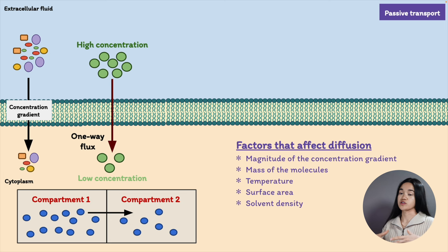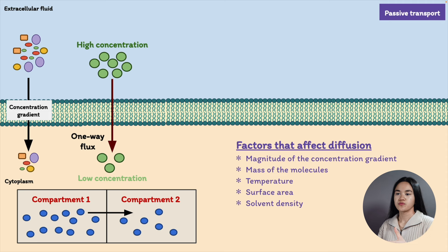Another factor is surface area — the more surface area there is between two regions, the more space available for diffusion and the faster the net flux. Next is solvent density: as the density of a solvent increases, the rate of diffusion decreases because molecules slow down. For example, cells use diffusion to move materials within the cytoplasm; increasing cytoplasm density would hinder that movement. Another important factor is distance.